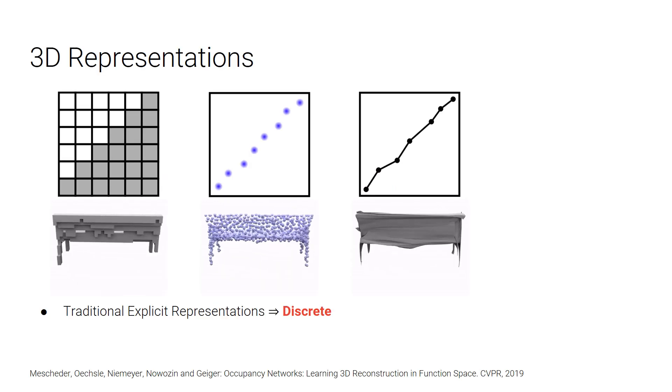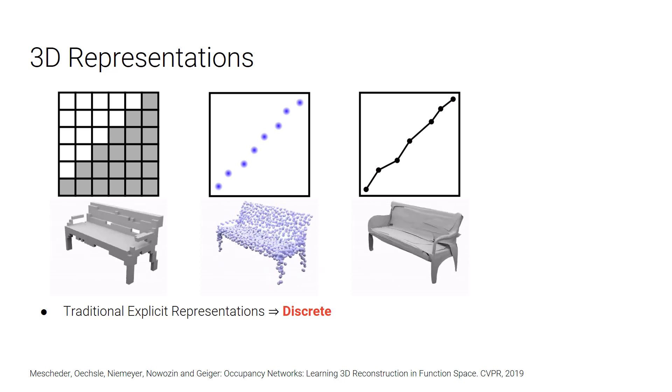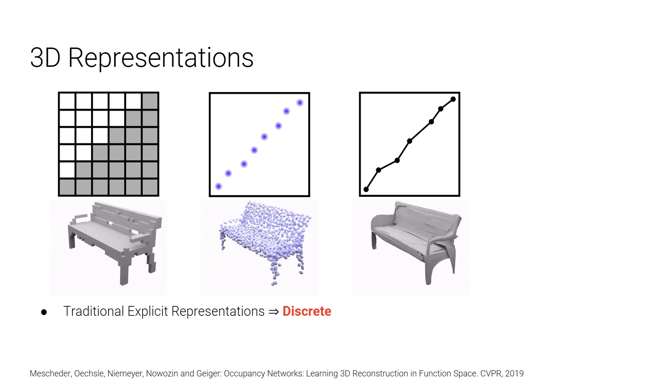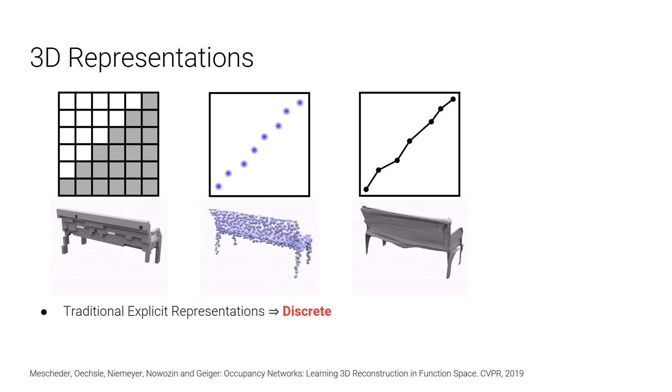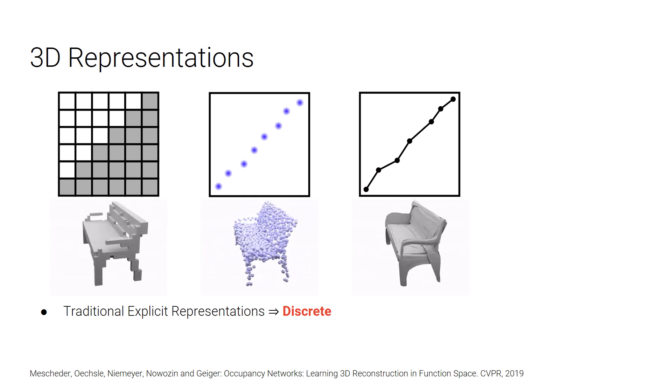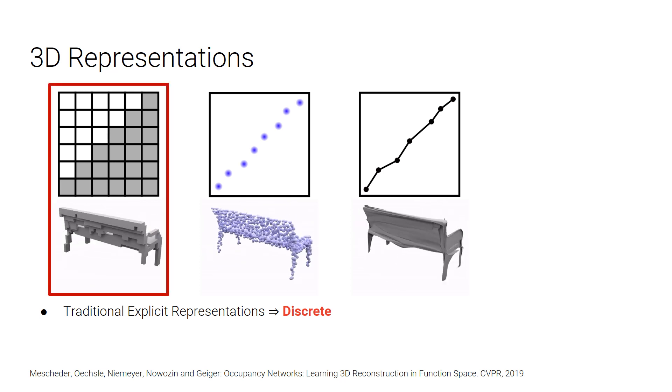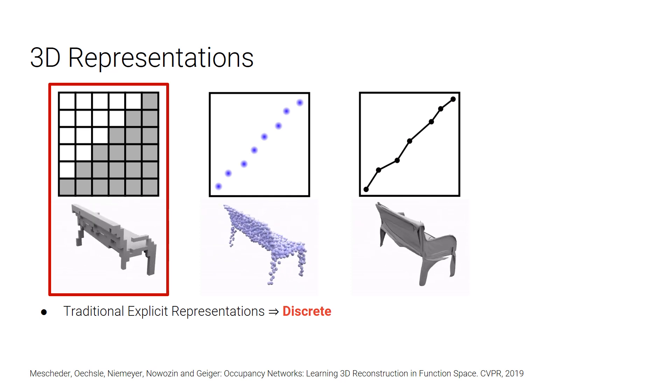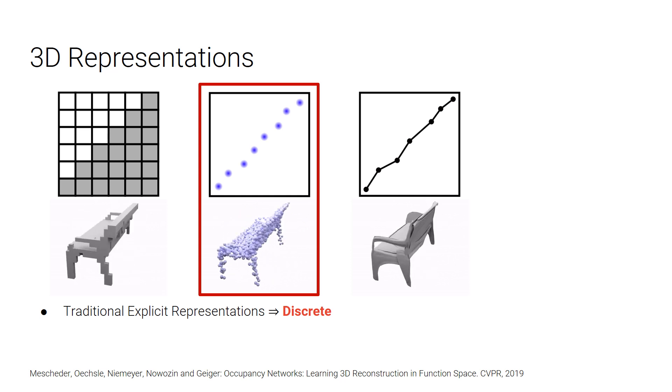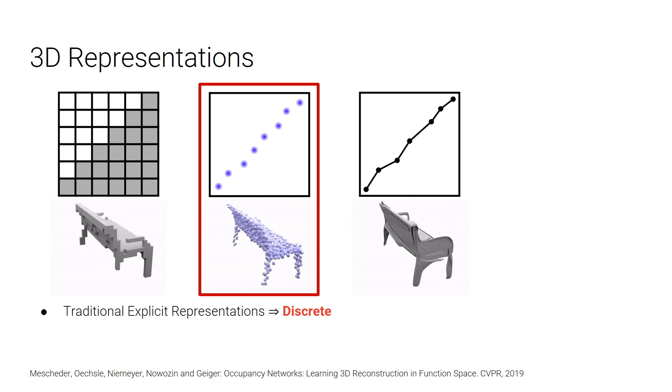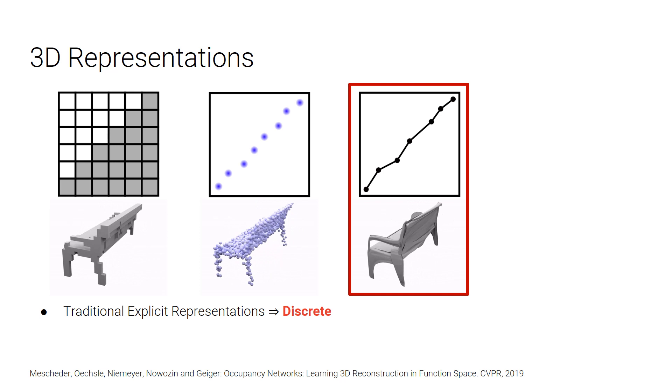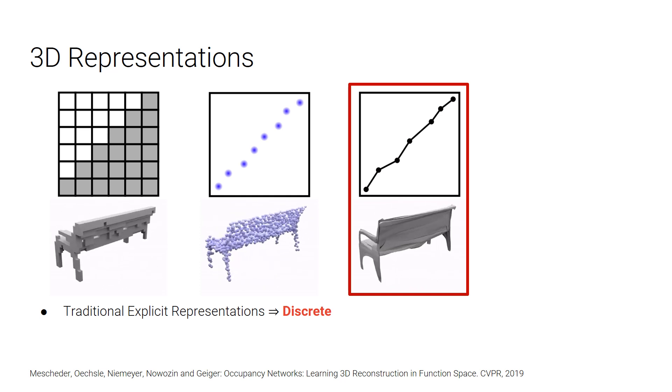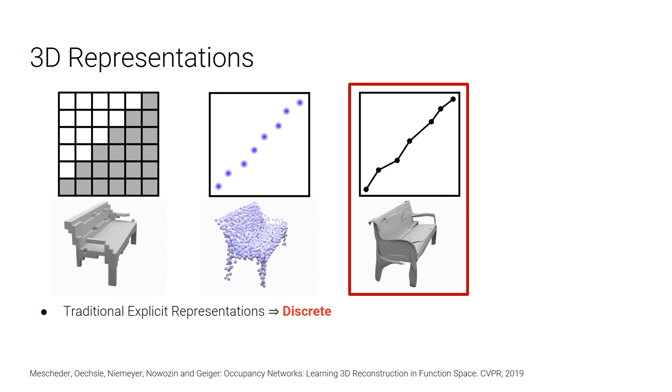Traditionally, learning-based 3D reconstruction approaches use discrete output representations, such as voxels, point clouds, and meshes. However, each of these representations has certain disadvantages. Voxel-based representations are usually limited to relatively low resolutions due to memory issues. Point-based representations lose topology. And mesh-based representations are often difficult to predict using neural networks, which either need a template mesh, or leads to non-watertight reconstructions.